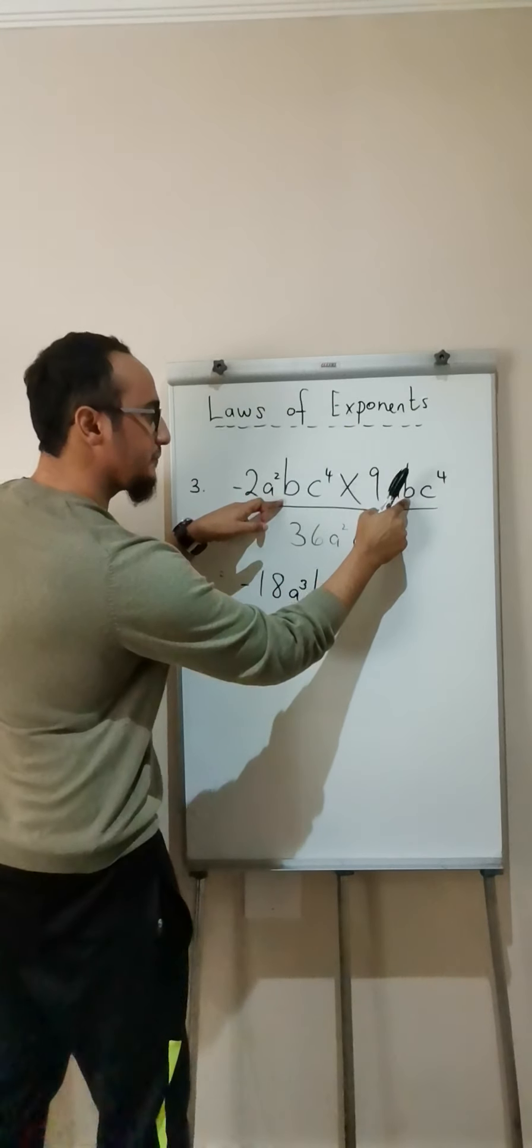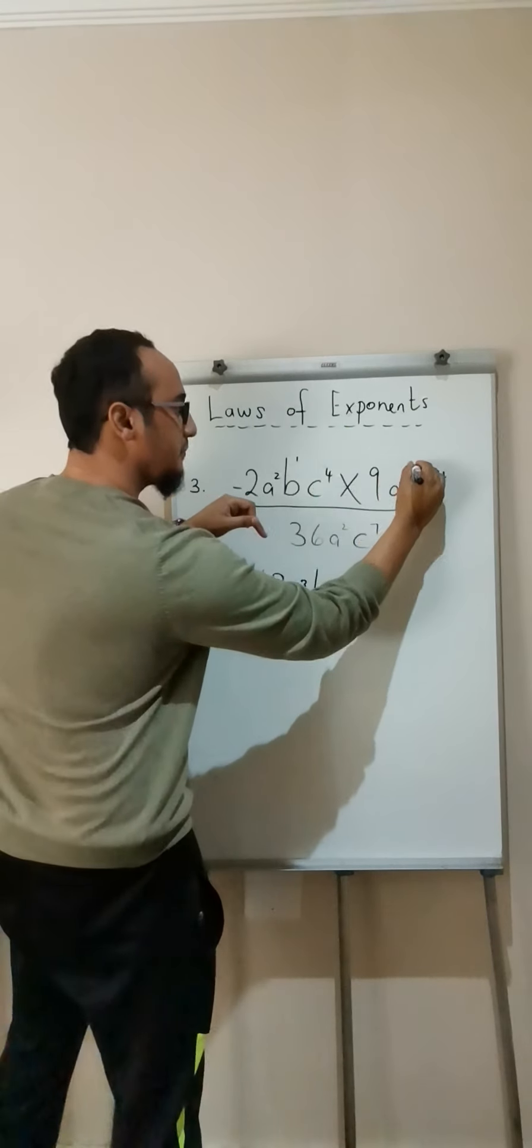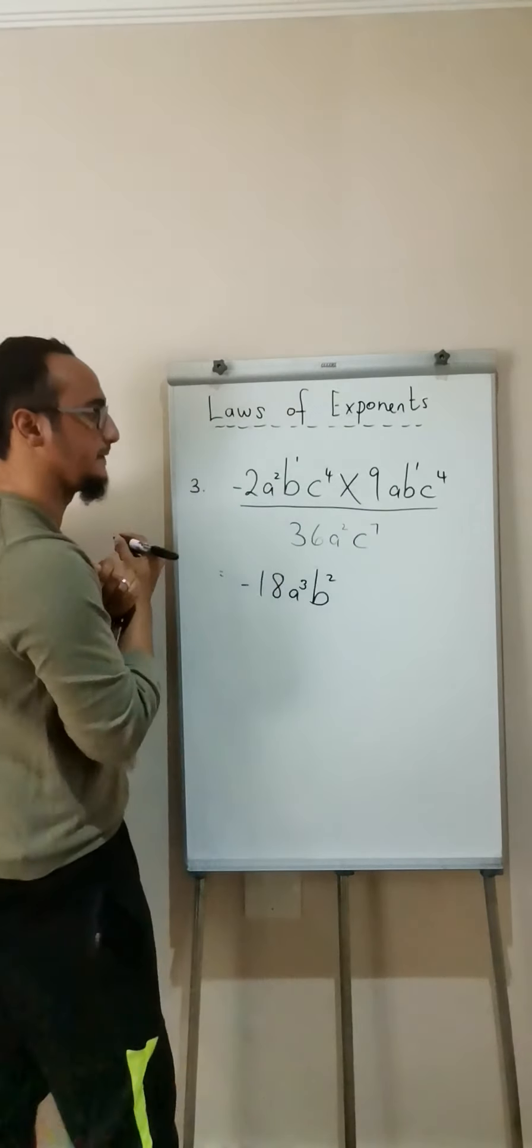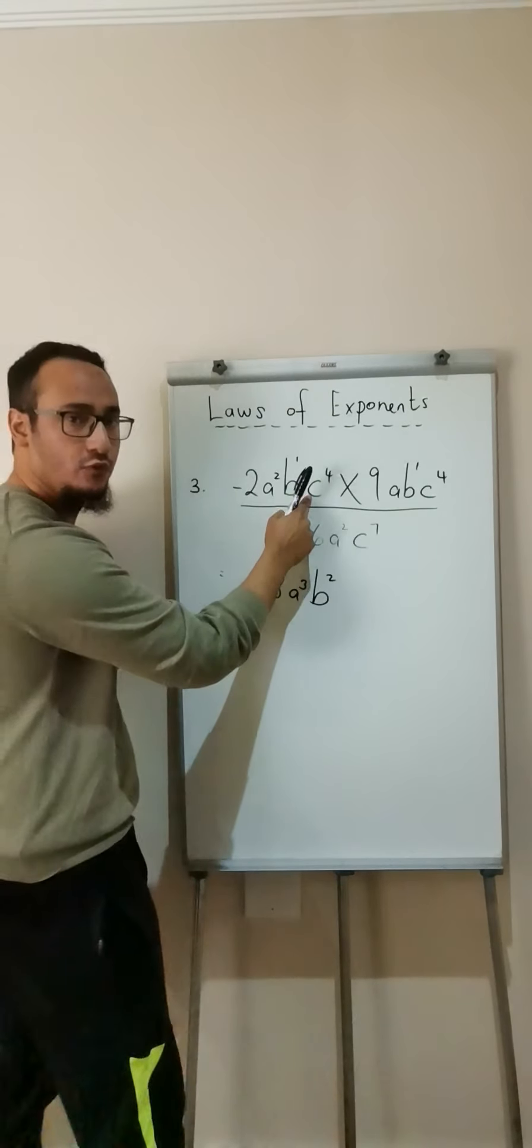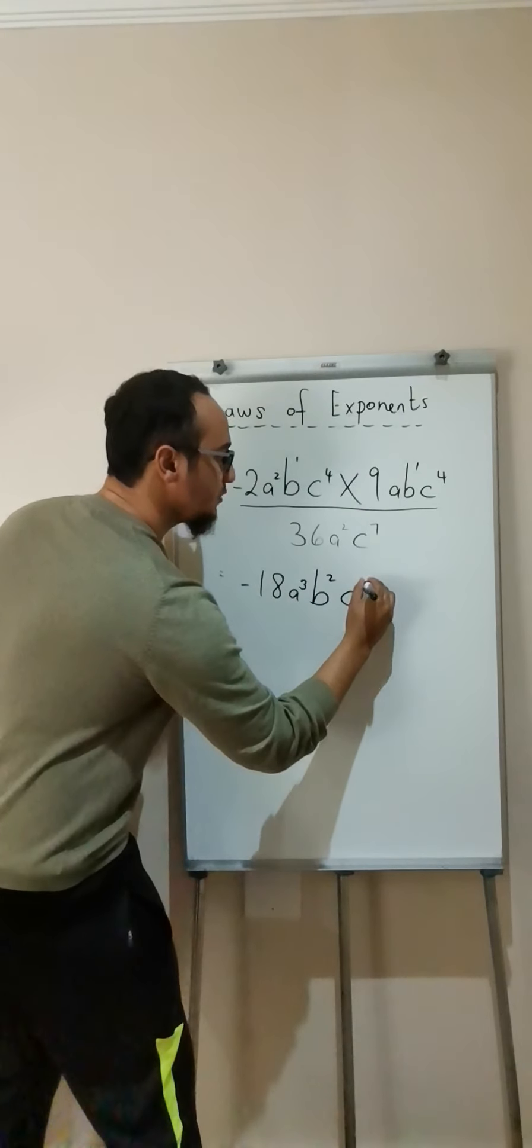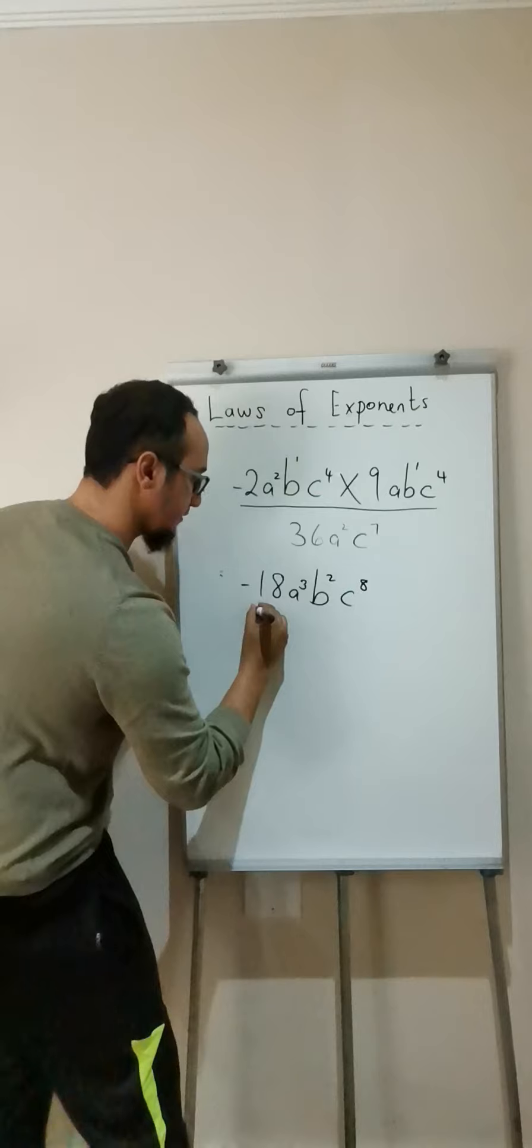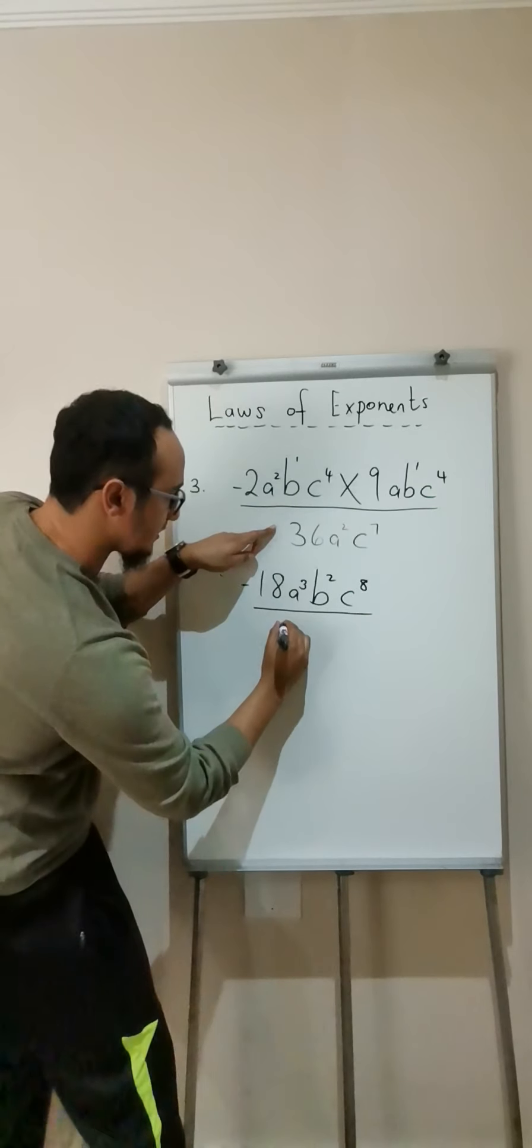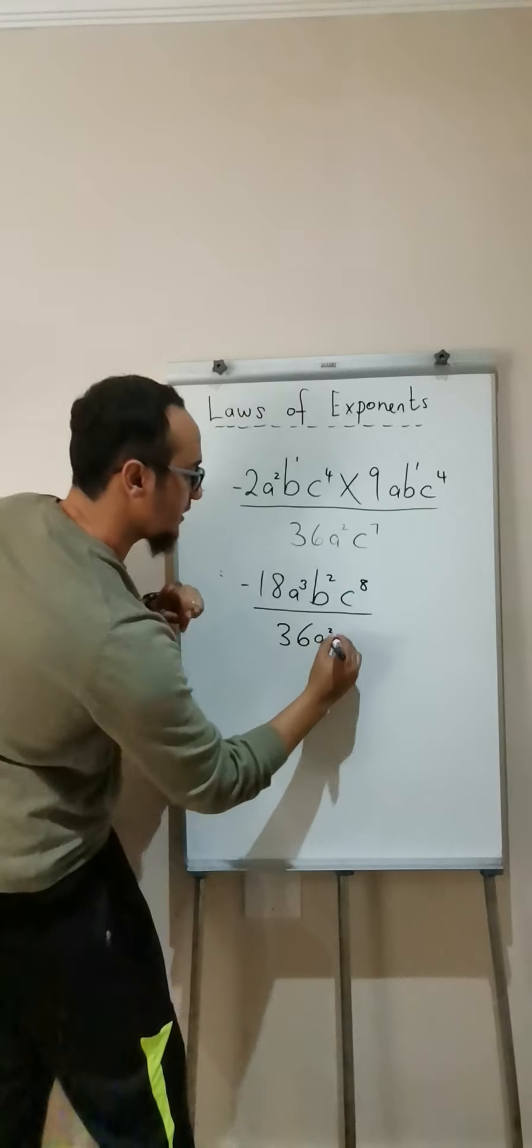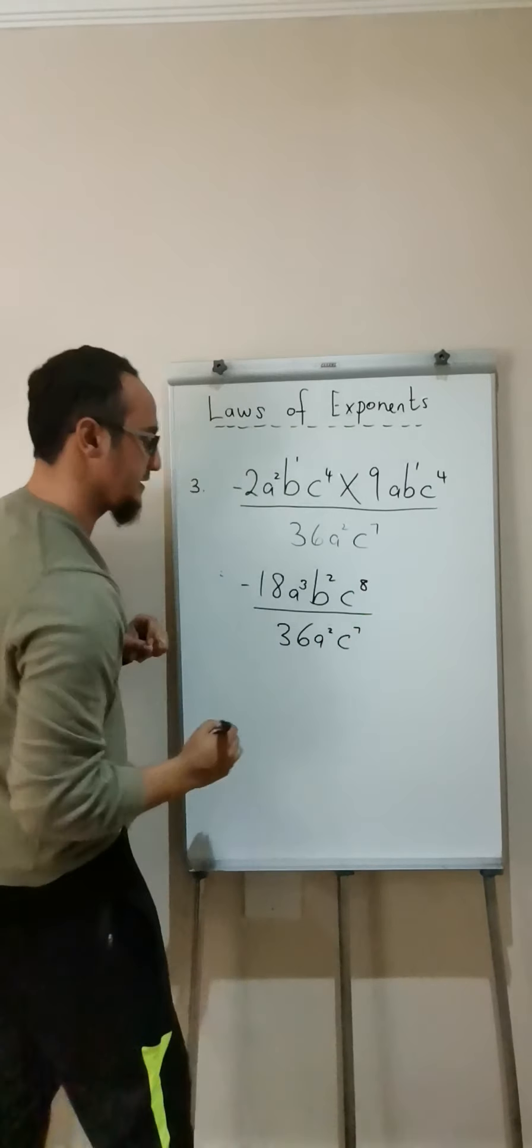What about my B's? B multiplied by B. This is imaginary 1. Imaginary 1. 1 plus 1 is equal to B squared. C to the power of 4 multiplied by C to the power of 4 is equal to C to the power of 8. C to the power of 8 over 36. A squared C to the power of 7.